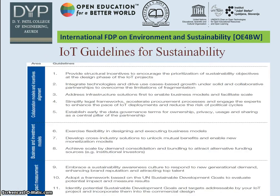Here are a few IoT guidelines for sustainability which are referred to. These are broadly classified into three categories. First, collaboration models and incentive alignment. Second, business and investment models. And third is impact measurement. We should concentrate on the impact measurement aspect as far as environment sustainability is concerned.